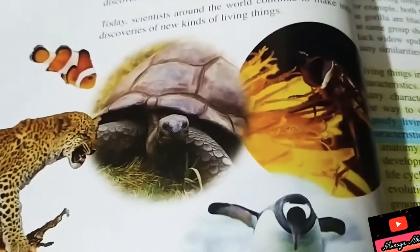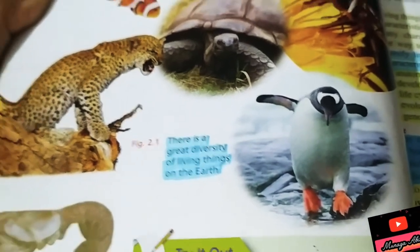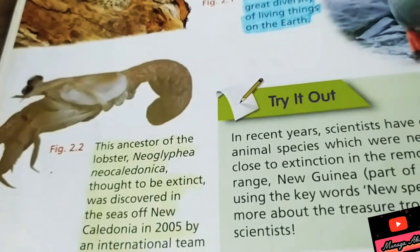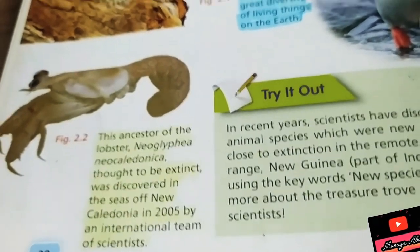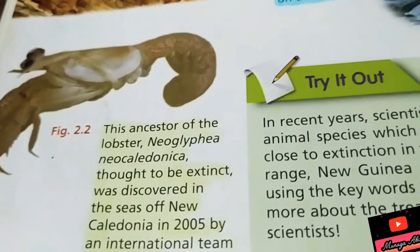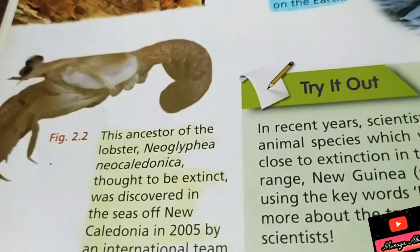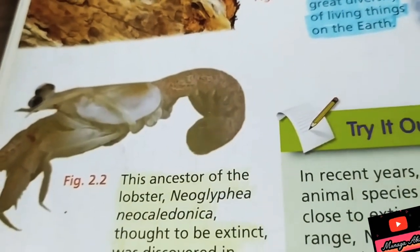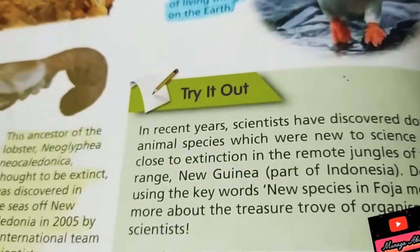Whether they are living in alpine zones or off New Caledonia — for example, this lobster was discovered in 2005 as a relative of an extinct species, and its name is Nuclefia Nucleidonica.